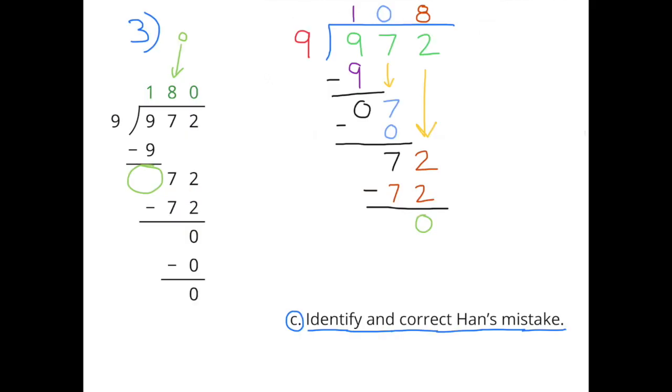C, Identify and correct Han's mistake. When Han subtracted 9 from 9, he got 0, and he brought down the 7 in the 10s place. And since 9 doesn't go into 7, he forgot to put the 0 on the top in the 10s place. Then he brought down the 2 in the 1s place, and he had 72. He figured that 9 went into 72 8 times, and instead of putting the 8 in the 1s place on the top, he put the 8 in the 10s place on the top.